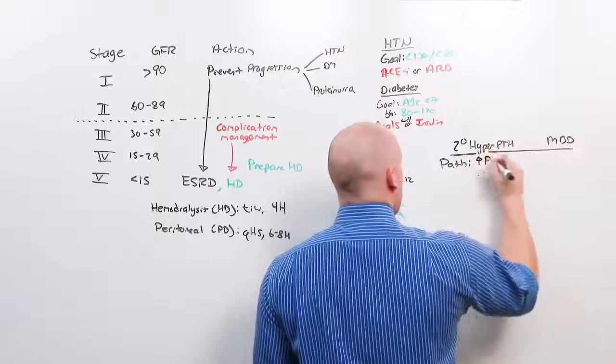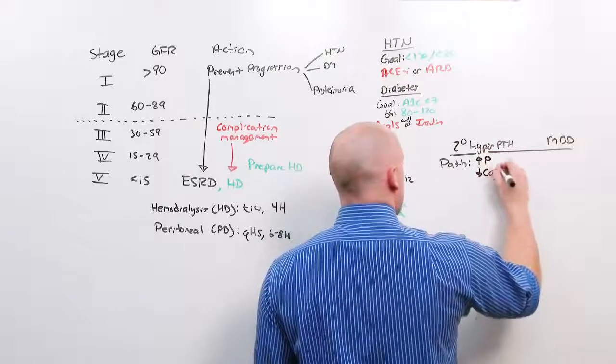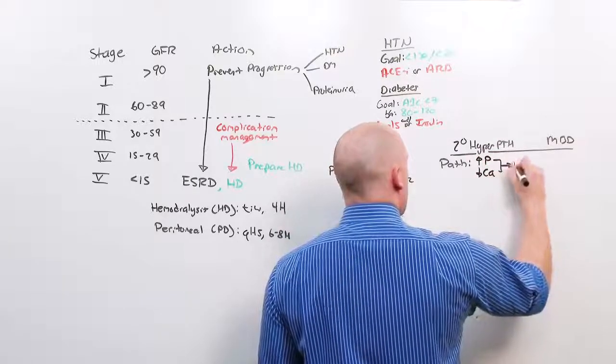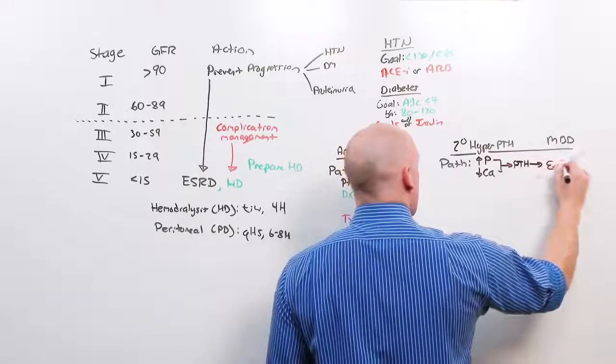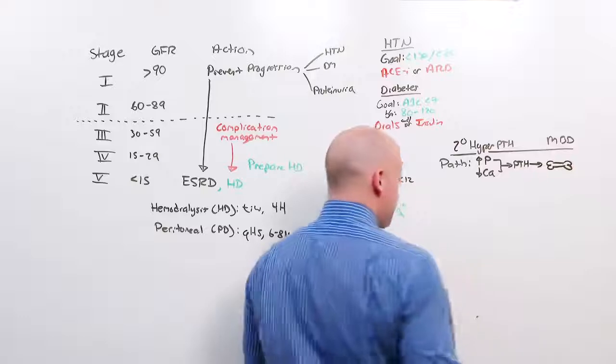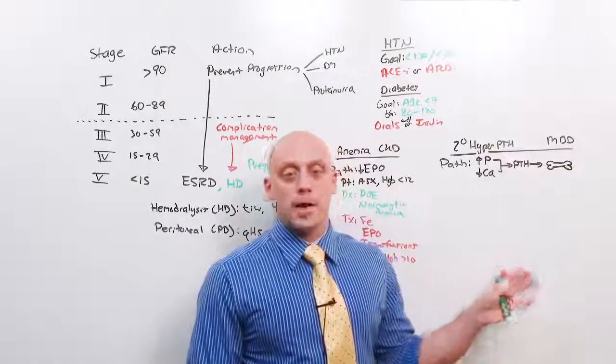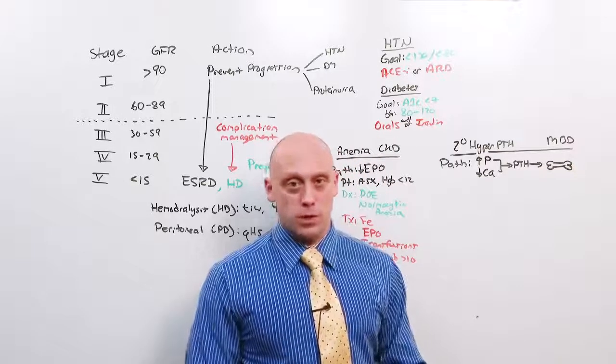Two complications sort of go hand in hand, and that is going to be secondary hyperparathyroidism and mineral bone disease. An elevated phosphorus and a low calcium both stimulate parathyroid hormone. Parathyroid hormone goes to the bone and resorbs bone. This is far more complicated than I want to get into now, and we'll talk more about it in the calcium lecture.